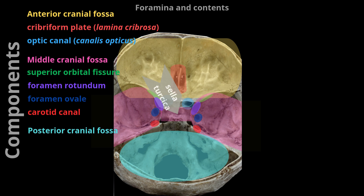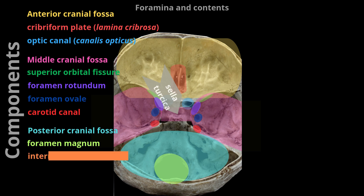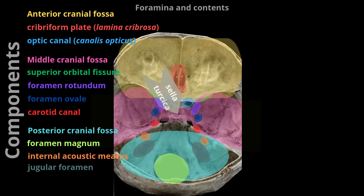Posterior cranial fossa: The largest opening in the skull is the foramen magnum. Here the brain stem leaves the skull and becomes the spinal cord. The foramen magnum is situated in the center of the posterior cranial fossa, separated from the middle cranial fossa by the dorsum sellae and the upper edge of the petrous bone. Further important structures are the internal acoustic meatus (facial nerve, vestibulocochlear nerve), the jugular foramen (internal jugular vein, glossopharyngeal nerve, vagus nerve, accessory nerve), and the hypoglossal canal (hypoglossal nerve).